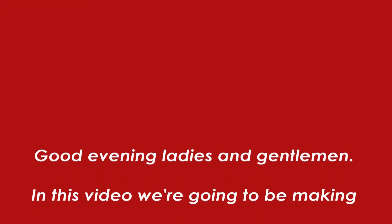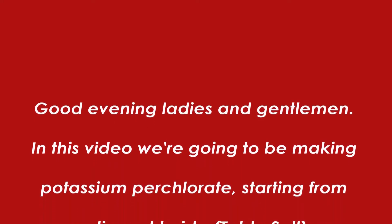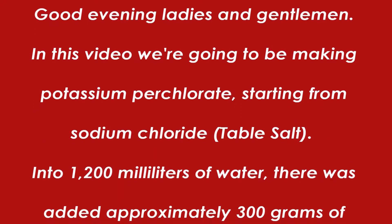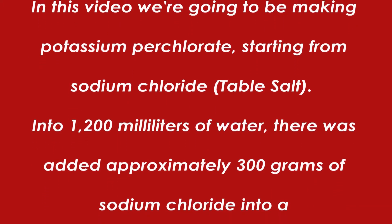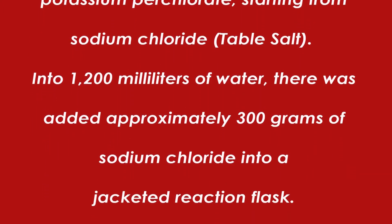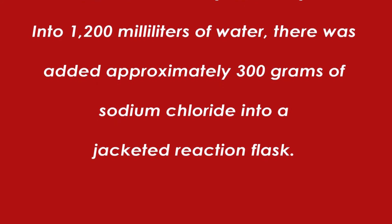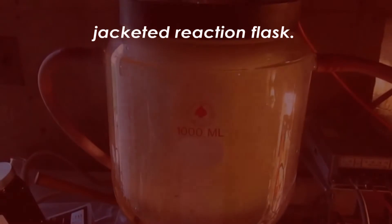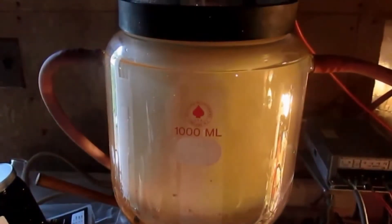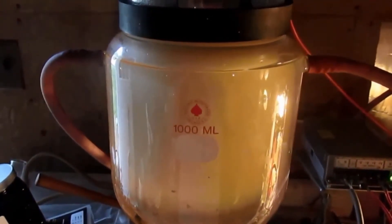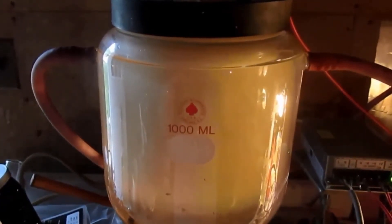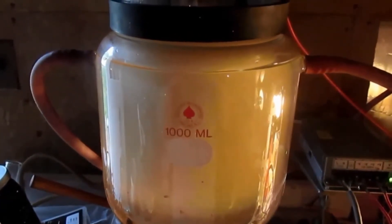Good evening, ladies and gentlemen. In this video we're going to be making potassium perchlorate starting from sodium chloride. Into 1200 milliliters of water there was added approximately 300 grams of sodium chloride into a jacketed reaction flask. The jacket isn't truly necessary, but I like to do this because it keeps the electrolyte from coming to a boil.